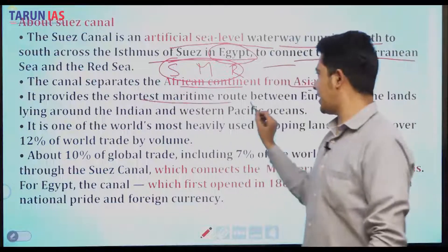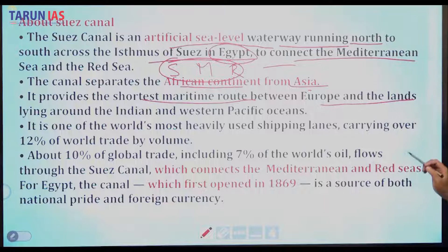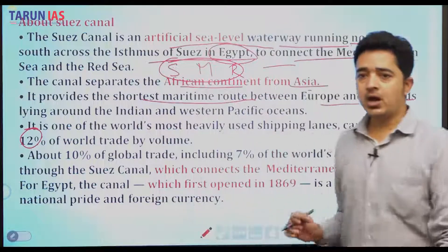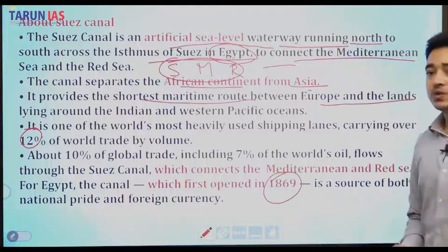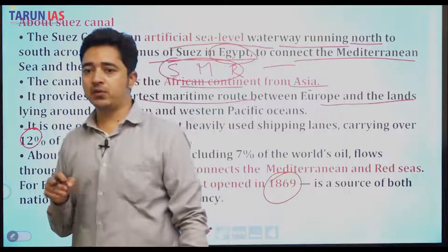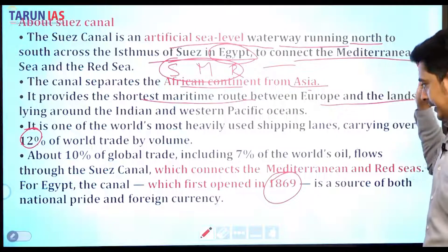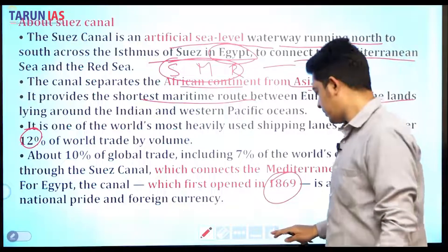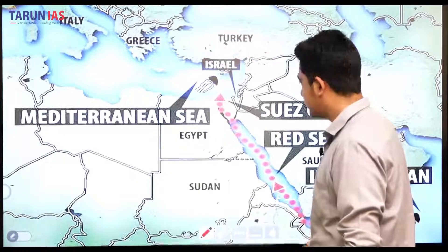The Suez Canal provides the shortest maritime route between Europe and the lands around the Indian and western Pacific Oceans. It is one of the world's most heavily used shipping lanes, carrying over 12 percent of world trade — or 10 percent of global trade, including seven percent of the world's oil flows. For Egypt, the canal — which first opened in 1869 — is a source of both national pride and foreign currency.